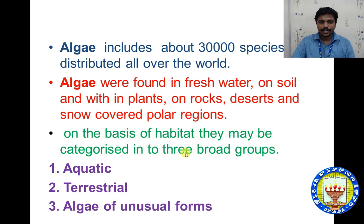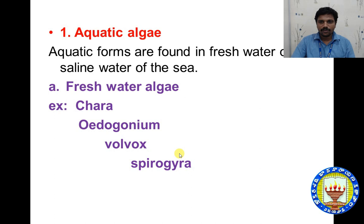Algae members, on the basis of habitat, may be categorized into three broad groups: aquatic, terrestrial, and algae of unusual forms. Aquatic forms are found in freshwater and saline water of the sea. There are three main classes represented: Chlorophyceae, Phaeophyceae, and Rhodophyceae. Chlorophyceae members are green algae; brown algae are represented as Phaeophyceae members; and red algae members are represented as Gracilaria and Gigartina species.